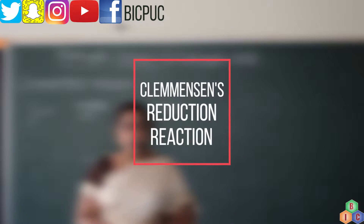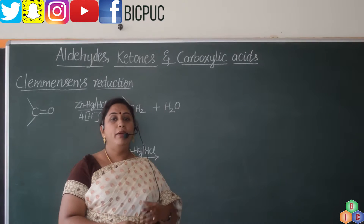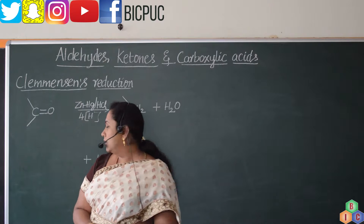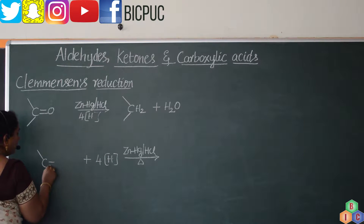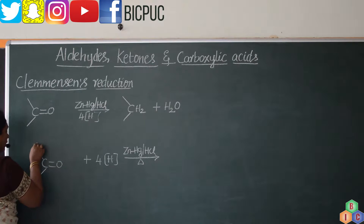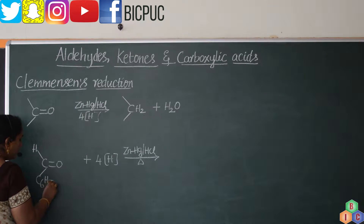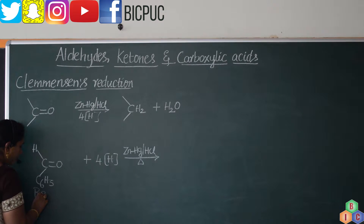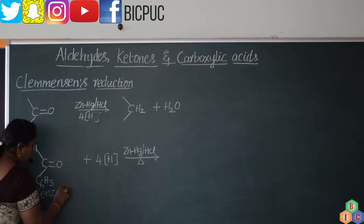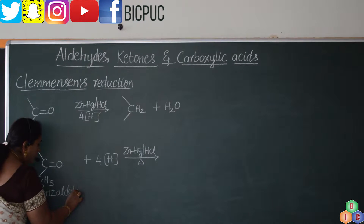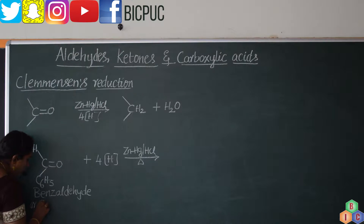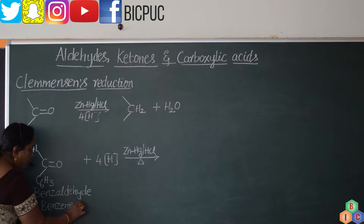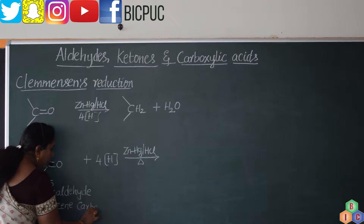In this video, let us understand what happens to benzaldehyde upon Clemmensen's reduction. Benzaldehyde, with the formula C6H5CHO, is a sanctioned IUPAC name. The actual IUPAC nomenclature for this compound is benzene carbaldehyde.